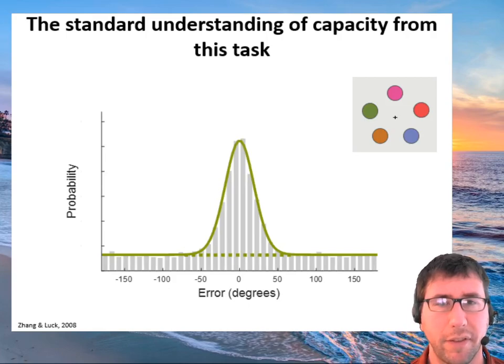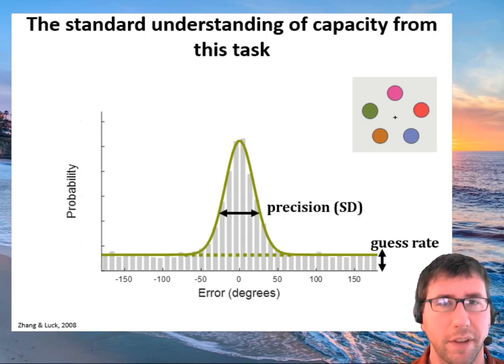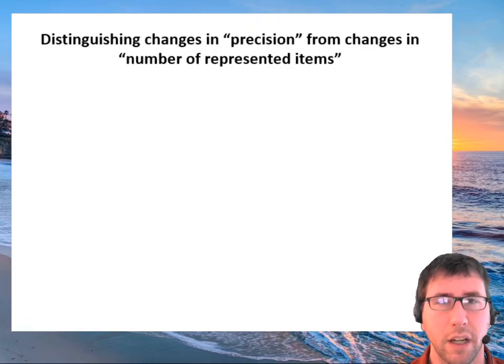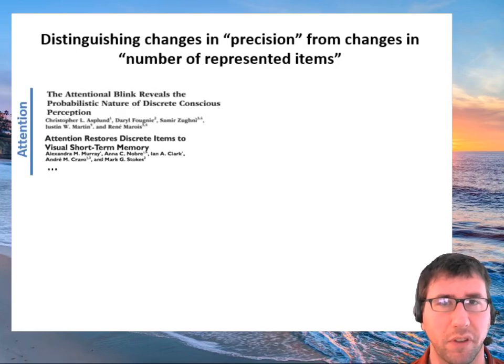And lots of people have fit models to this, including mixture models which are the most prevalent, that say that the long fat tail actually comes from a uniform distribution of guesses, and a central distribution comes from the remembered items with some precision. And this way of thinking is extremely prevalent.